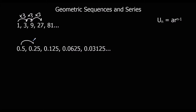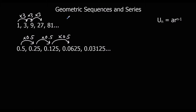Same thing for the second example. To get from 0.5 to 0.25, you multiply by a half. To get from 0.25 to 0.125, you multiply by a half, and so on. So that is also a geometric sequence because it's got a common ratio. The common ratio r for the first one is 3, and r for the second one is 0.5.